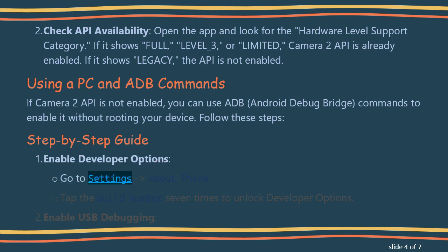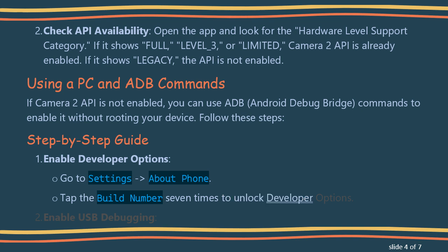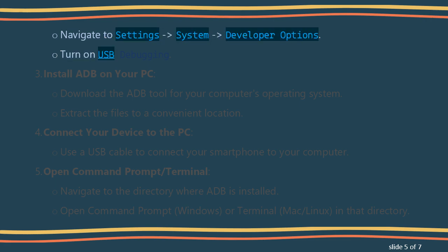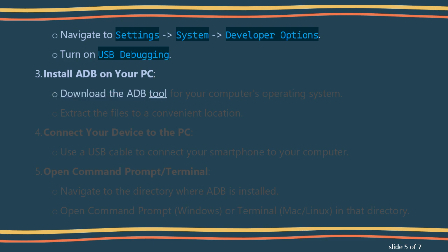Enable Developer Options by going to Settings > About Phone, then tap the Build Number 7 times to unlock Developer Options. Next, enable USB Debugging by navigating to Settings > System > Developer Options and turning on USB Debugging. Then install ADB on your PC by downloading the ADB tool for your computer's operating system.